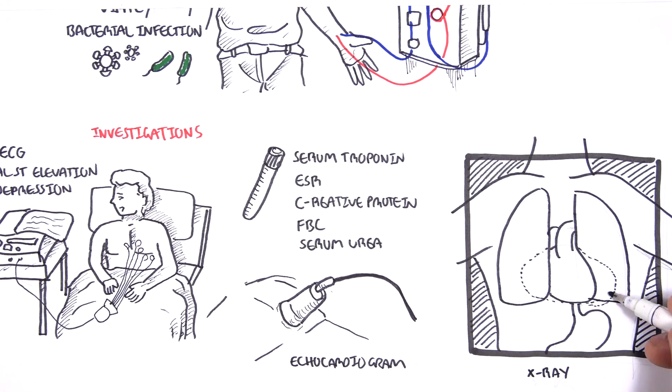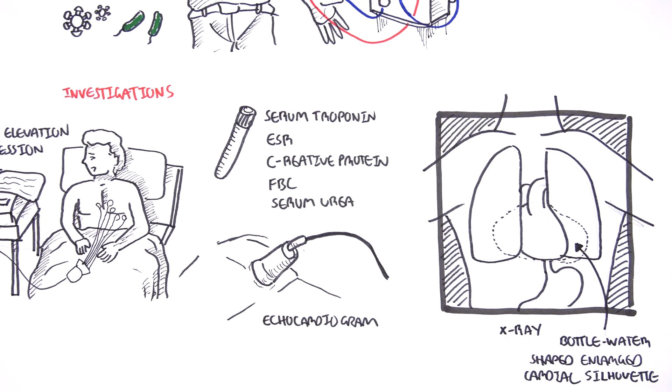Performing an x-ray may show a bottle of water shaped enlarged cardiac silhouette, which is a sign of pericardial effusion.